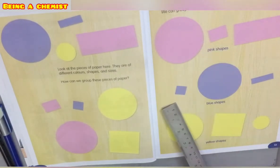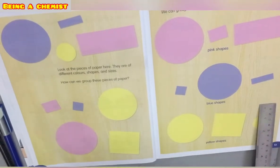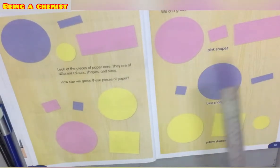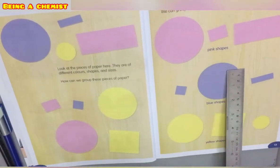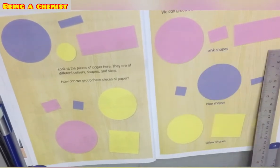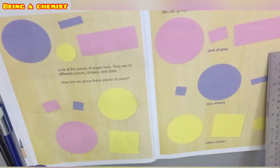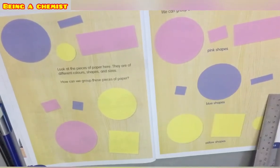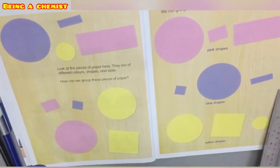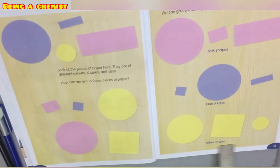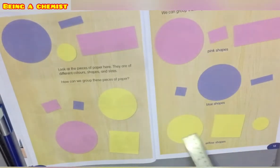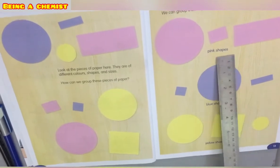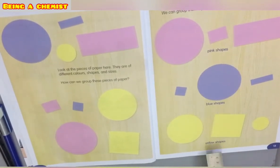The first color is pink, so all pink colored pieces of paper are arranged in this group. Blue color — all blue colored pieces of paper are in each group. Yellow colored — all shapes of paper are arranged by color. So we have grouped them by color: pink, blue, and yellow colored.